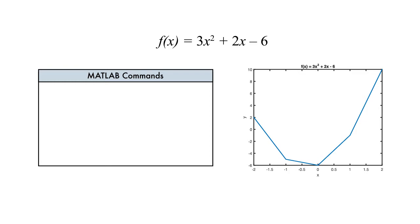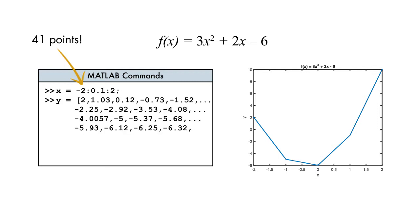To make a smoother curve, we'd need to repeat the calculation for many values of x. We can create a large vector of x values using the colon operator. But do we still have to calculate the y values individually?